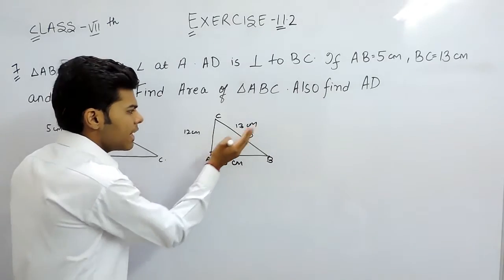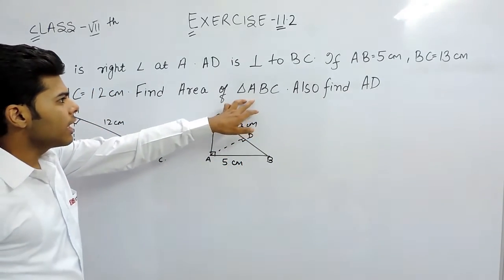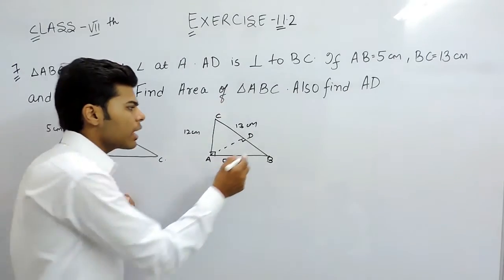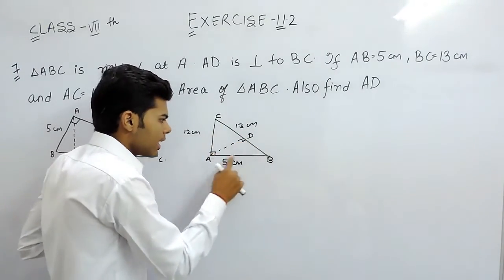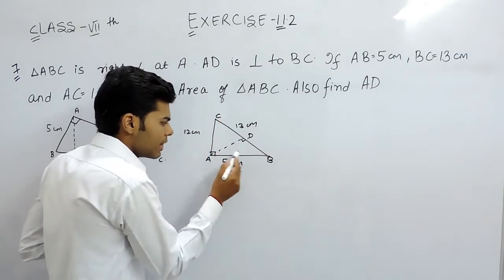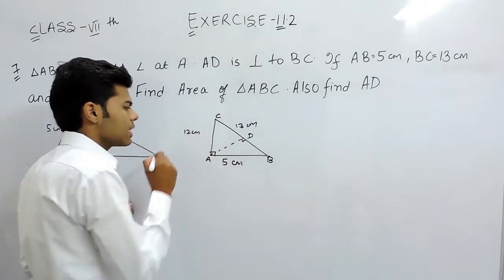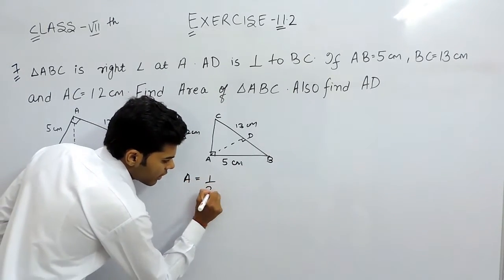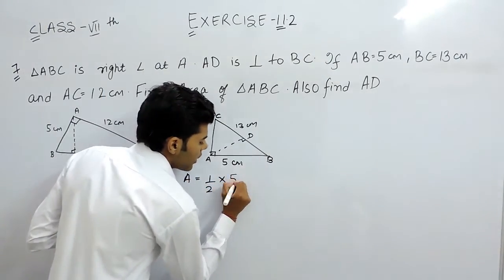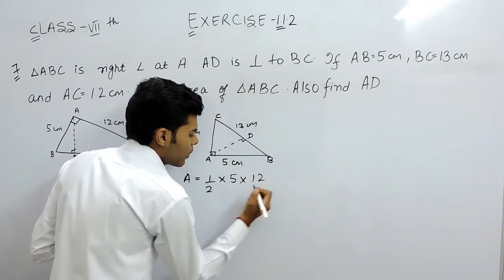We do not need this AD because we just have to find the area first of all. After that we will think of this AD. Now in this right angle triangle, this is the base and this is the height. So area will be equal to half into base that is 5 into height that is 12.